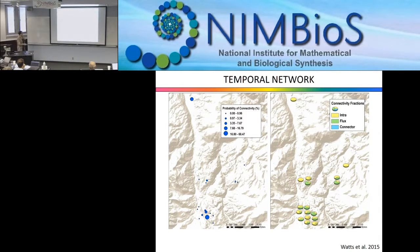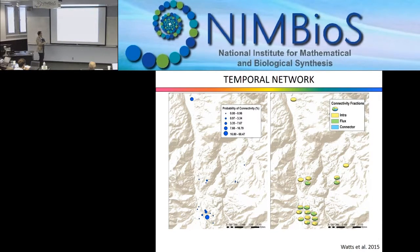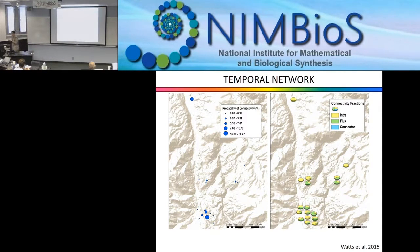Now the contribution of each pond to connectivity changes over time — some stay the same, some were more connected previously, and we find that the flux is mostly in the immediate neighborhood. Most importantly, connectivity importance is now primarily driven by pond size — the intra component.